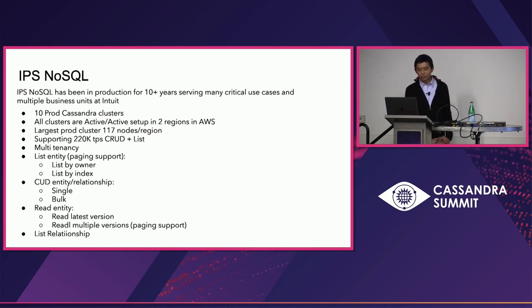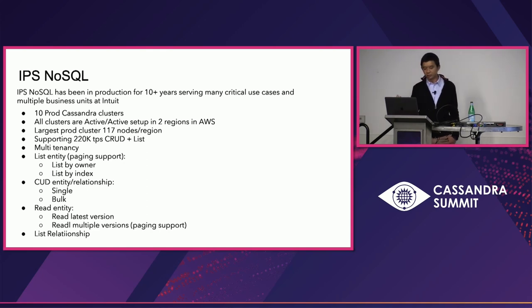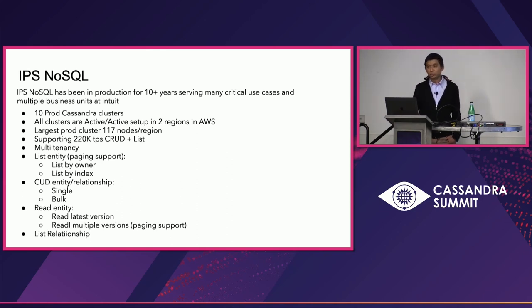Our system is multi-tenancy; we usually stand up a cluster per business unit. Our API is relatively simple: CRUD plus lease. For the lease entity API, we have two flavors — lease by owner and lease by index. We have create, update, and delete of entity and relationship, in both single and bulk flavors. For reading entity, most services just read the latest version, but we also support reading historical versions.